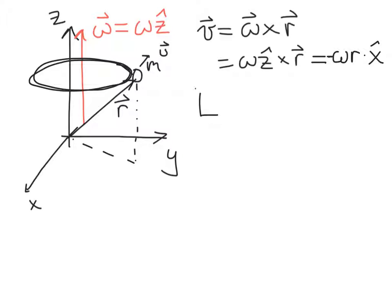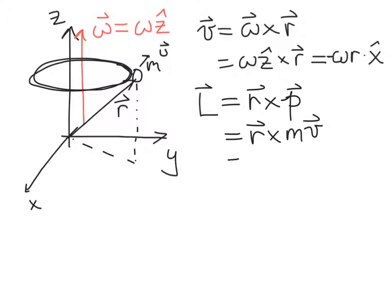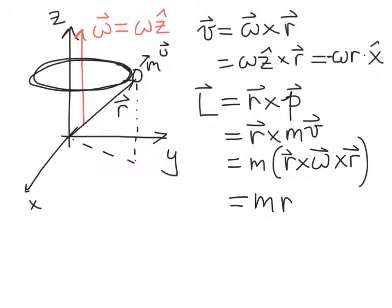Now we ask: what does the angular momentum vector look like? The angular momentum is r crossed into p, which is r crossed into mv — giving m times (r crossed into (omega crossed into r)). By the right-hand rule, the angular momentum vector must point at a right angle to both r and v. So when the particle is at this point, the angular momentum vector points in this direction — tilted away from the z-axis.